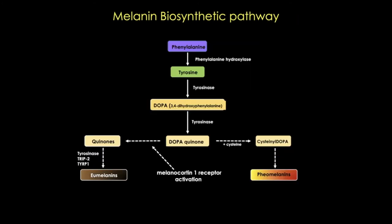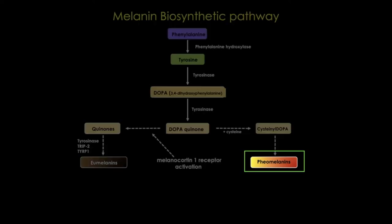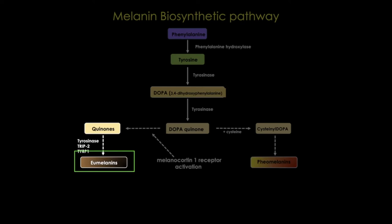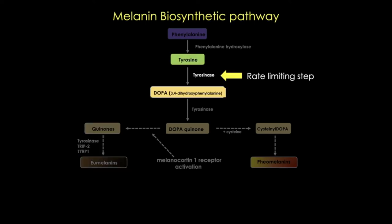Here's a simplified version of the melanin biosynthetic pathway. We can see the two major end products: pheomelanin and eumelanin. The first step—and the rate-limiting step—is catalyzed by the enzyme tyrosinase, which converts tyrosine to dihydroxyphenylalanine, or DOPA.